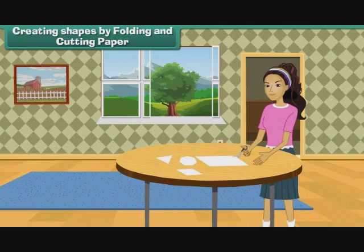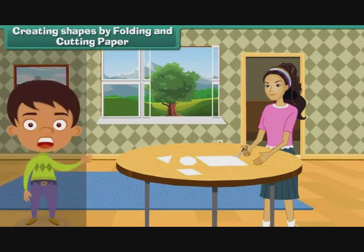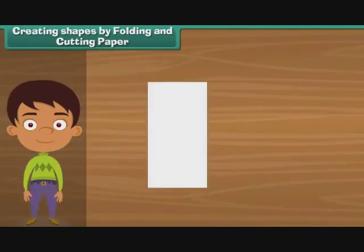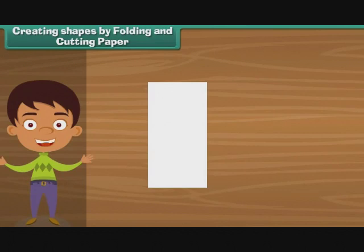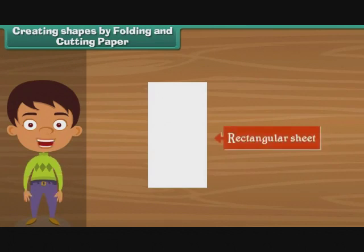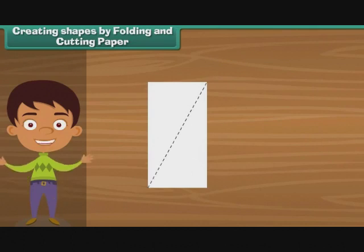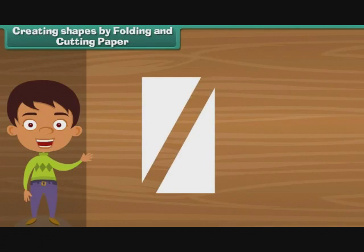Creating shapes by folding and cutting paper. Anu is busy cutting paper. She has cut paper in different shapes. Anu takes a sheet of paper. What can you say about the shape of this sheet? Yes, it is rectangular in shape. Anu tries to make a triangle out of it. Draw a dotted line on this sheet of paper like this. Cut the paper on the dotted line. Now what you see is a triangle.